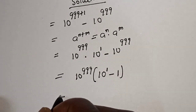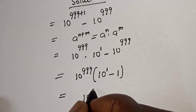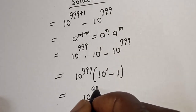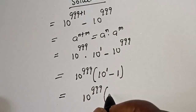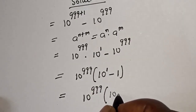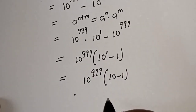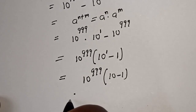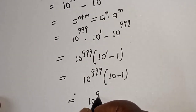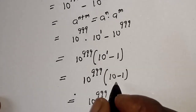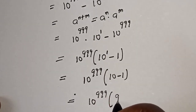This is equal to 10 raised to power 999, bracket, 10 raised to power 1 is 10, minus 1. This is equal to 10 raised to power 999, bracket, 10 minus 1, that is 9.